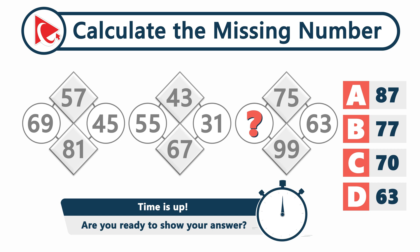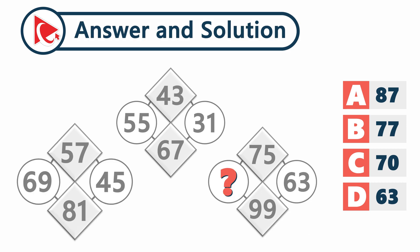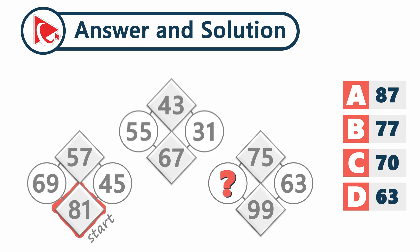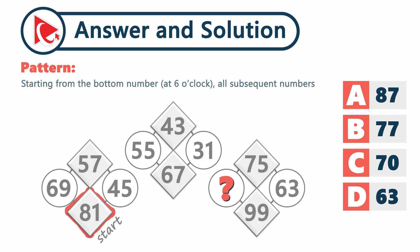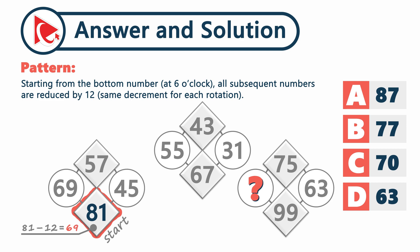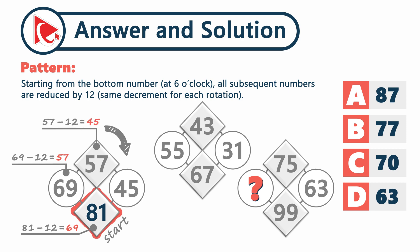Time's up. Are you ready to show your answer? Let's take a look at the first shape. Remember the hint — we have to start at the highest number, which is always at 6 o'clock. The pattern is that starting from the bottom number at 6 o'clock, all subsequent numbers are reduced by 12, which is the same decrement for every rotation. The highest number at 6 o'clock is 81. 81 minus 12 equals 69. 69 minus 12 equals 57. And 57 minus 12 equals 45.